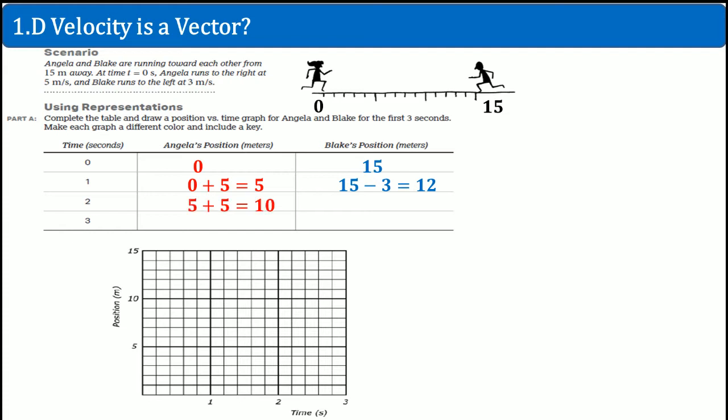At 2 seconds, Angela goes up to 10 because she has a constant rate of change. She's growing at 5 meters per second. So she goes up to 10. Blake is subtracting 3 because he's running 3 to the left. So Blake is at 9. 3 seconds, so forth and so forth.